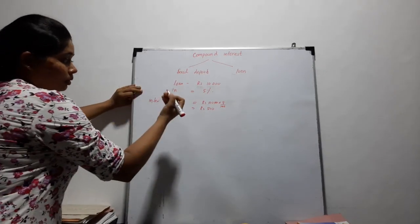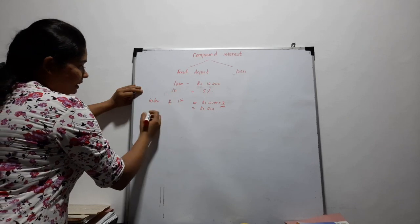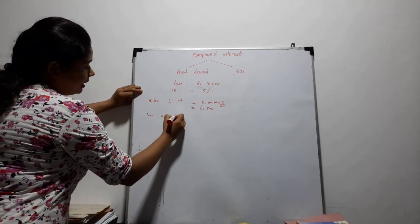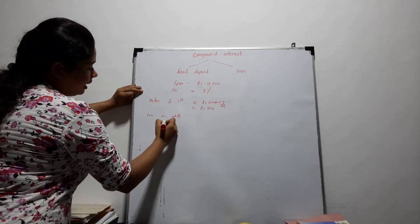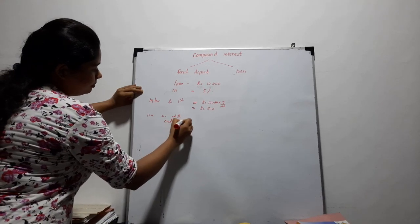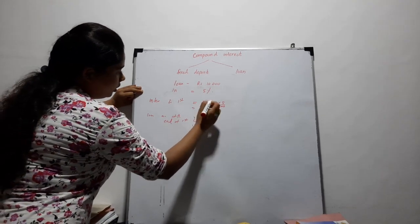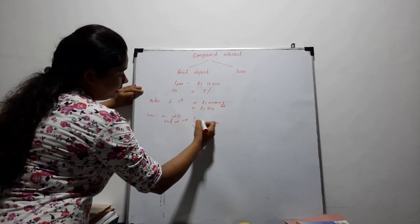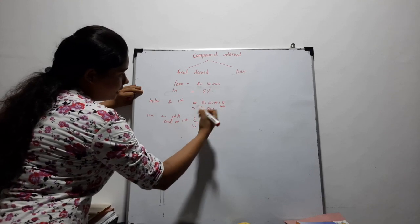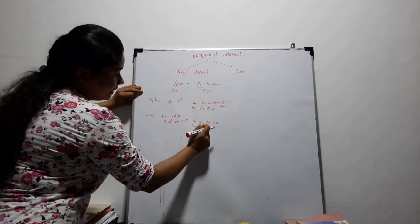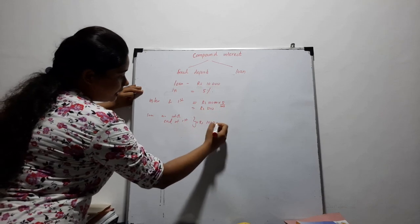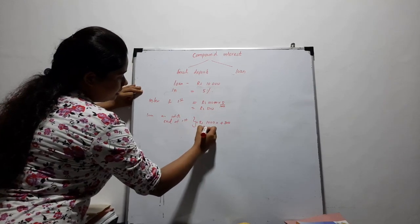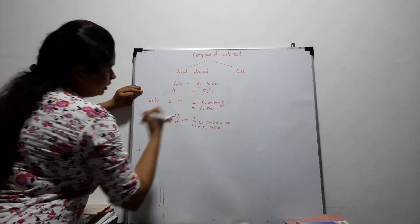Then the interest is 500. Now we have to calculate the loan amount at the end of the first year. The loan amount is 10,000, and since we calculate interest on the interest, we have to add the first year's interest to this. Then the total is 10,500.